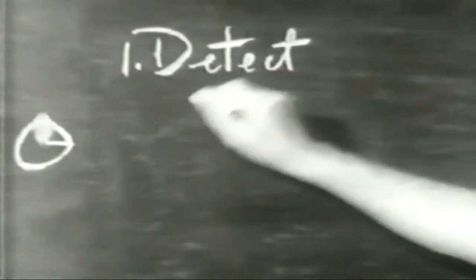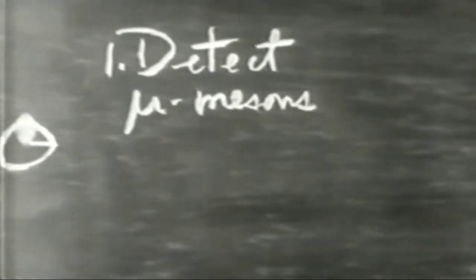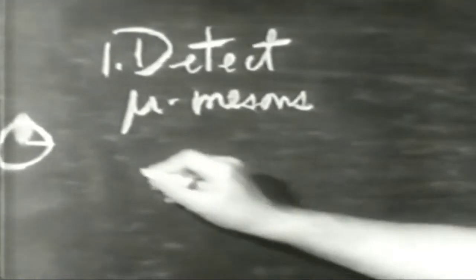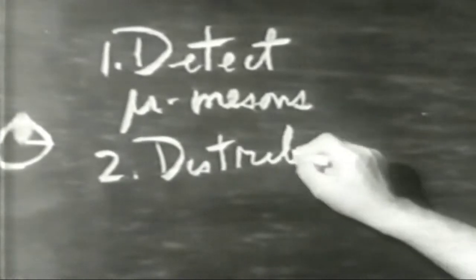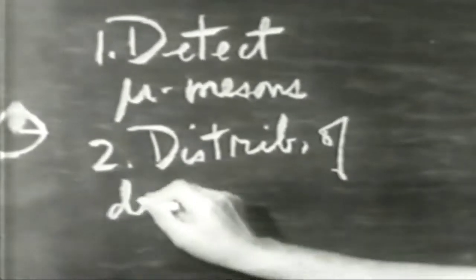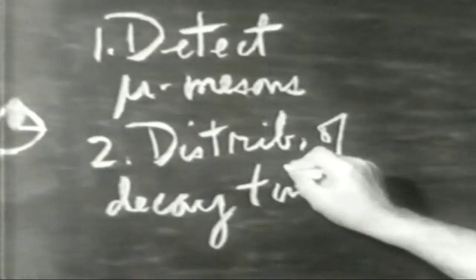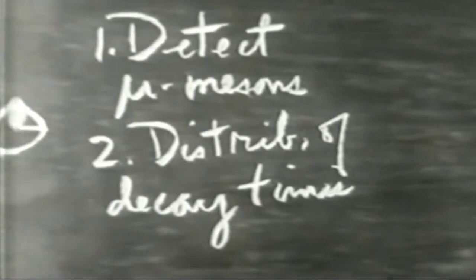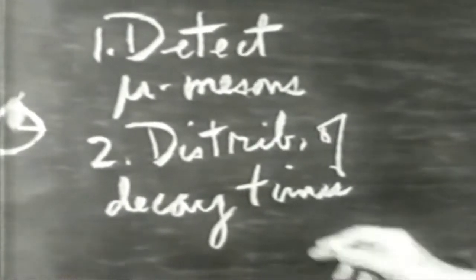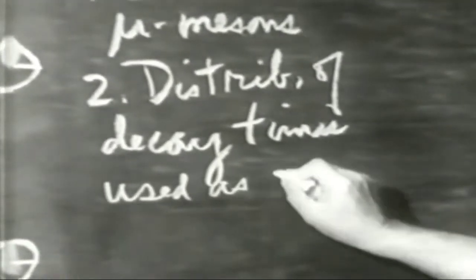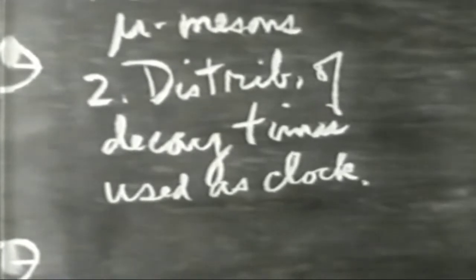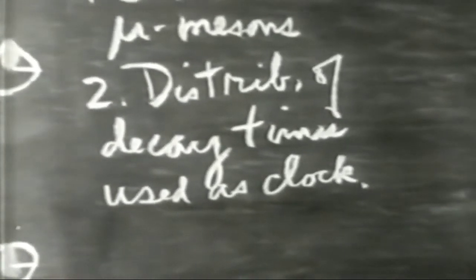Questi orologi di cui ora parleremo sono i mesoni mu, vale a dire particelle radioattive cariche dei raggi cosmici. Prima dobbiamo rivelarle. Primo: rivelare i mesoni mu. Poi dovremo fermare alcuni di questi mesoni mu per misurare la distribuzione dei loro tempi di decadimento. Come vedrete, questo ci permetterà di usare i mesoni per misurare intervalli di tempo: distribuzione dei tempi di decadimento in funzione dell'orologio. Infine useremo questi orologi a radioattività per misurare la dilatazione del tempo.